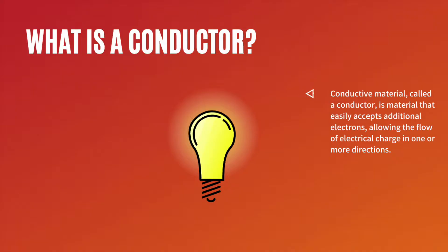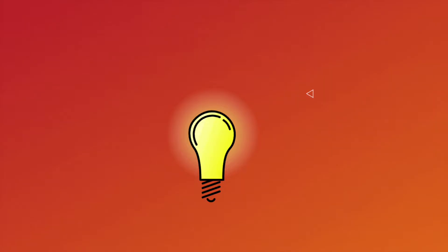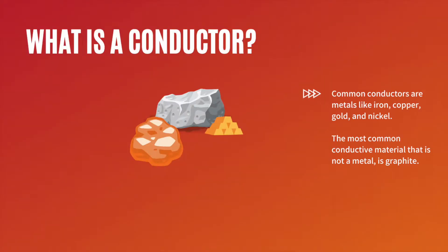Conductive material, called a conductor, is material that easily accepts additional electrons, allowing the flow of electrical current in one or more directions. Common conductors are metals like iron, copper, gold, and nickel. The most common conductive material that is not a metal is graphite.